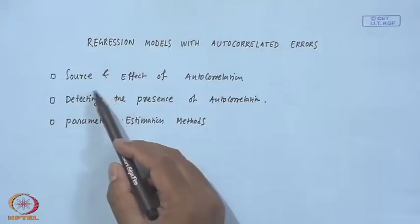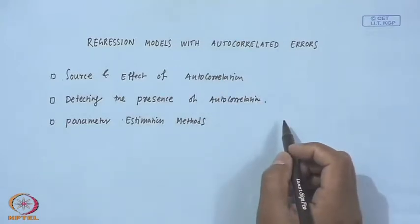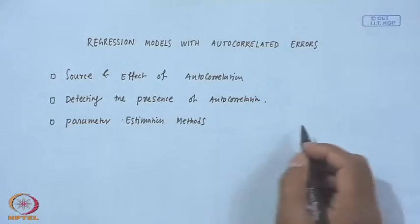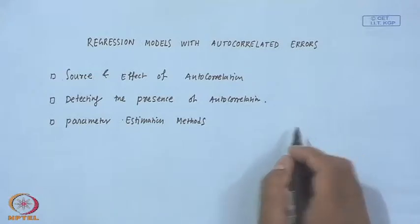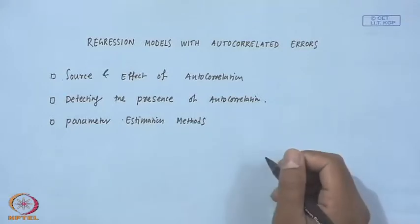This is my second lecture on regression models with autocorrelated errors. We already talked about the source and effect of autocorrelation in the regression model. In the previous class, we started talking about how to detect the presence of autocorrelation, and we will be talking about parameter estimation in the presence of autocorrelation in the model.